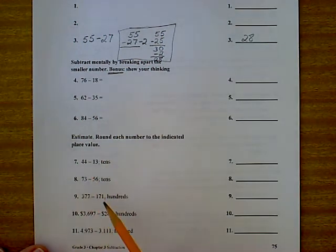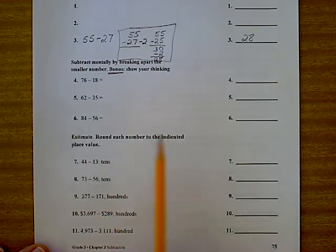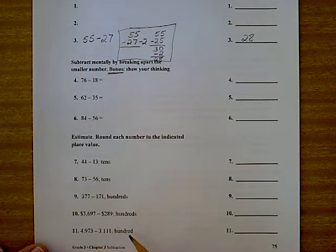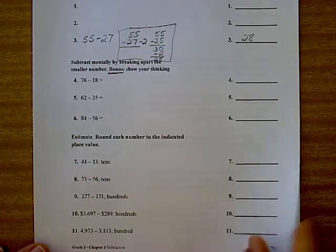This next part is the estimating part where you're going to round each one to the place that's given. I changed this one. I wanted you to do it to the nearest 10, but that's silly. So we're doing it to the nearest 100.